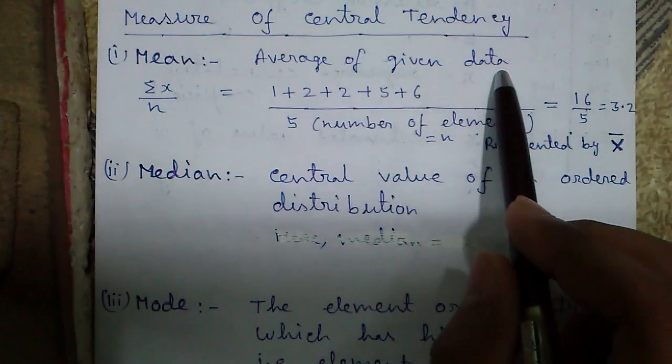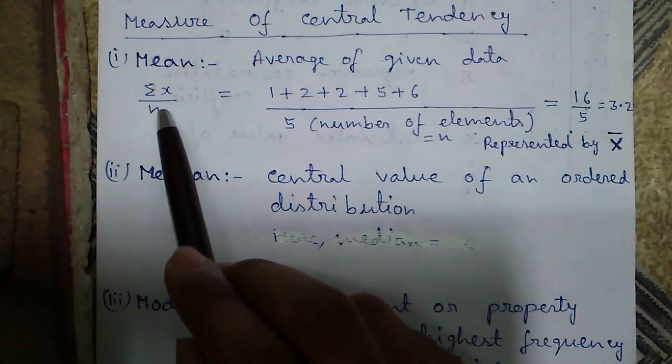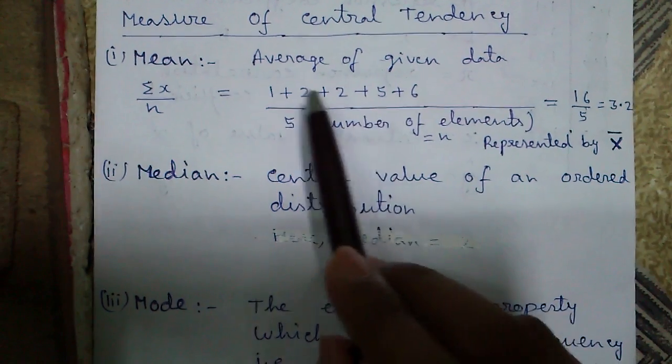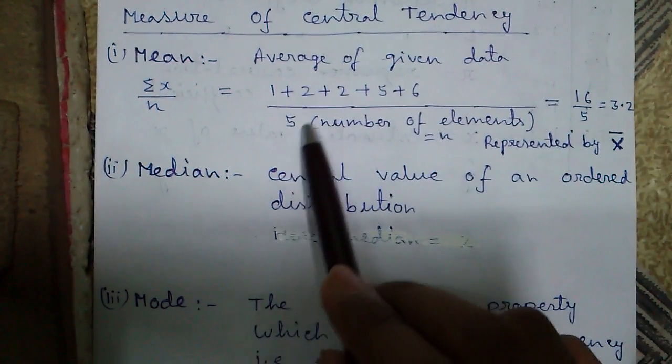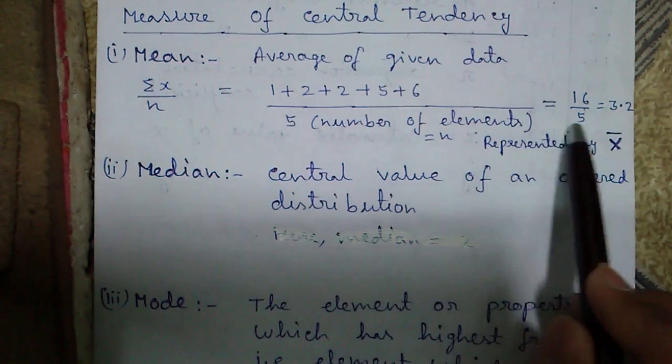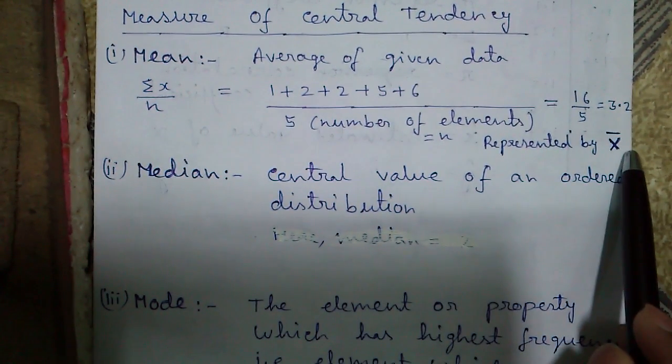So what is mean? Mean is the average of given data. It is given by sum of x values divided by number of elements. In our example, it is 1 plus 2 plus 2 plus 5 plus 6 divided by number of elements 5 is 3.2. Mean is represented by x bar.